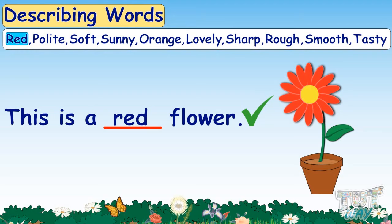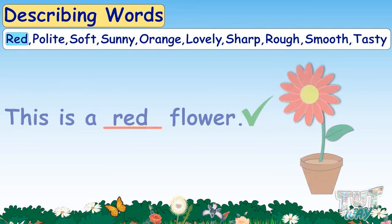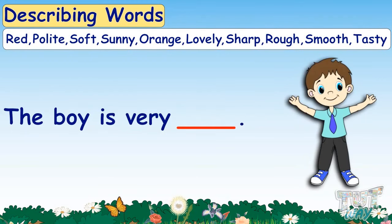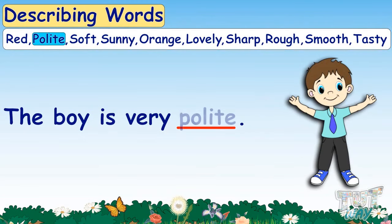Now let's have our next example. The boy is very ___. What can be a describing word for the boy? Red? No. Polite? Yes! We can put polite here. The boy is very polite.